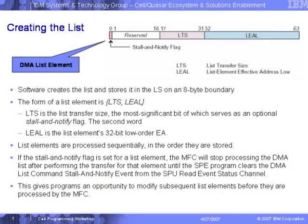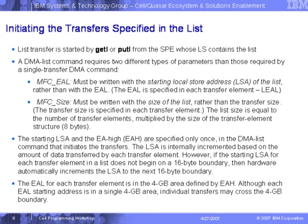A list element contains a transfer size (LTS) and an effective address low. Optionally, there can be a stall-and-notify bit. Sometimes the DMA list needs to stop after a certain list element is fetched — for example, after fetching 32 or 48 kilobytes — because the SPU may need to process that data before continuing with the remaining list transfers.